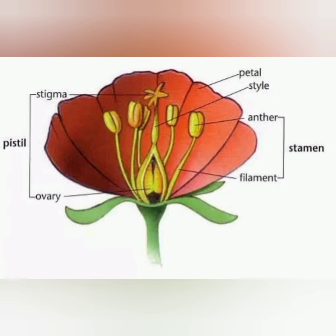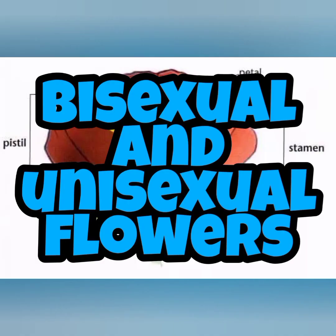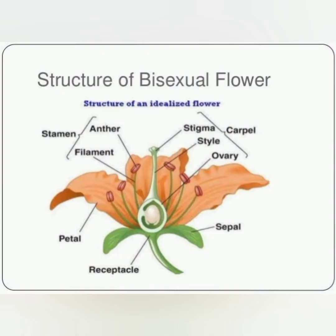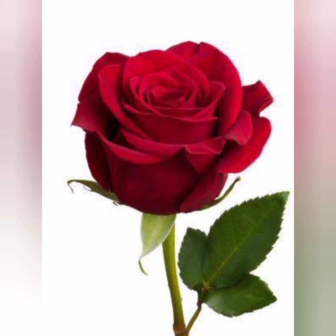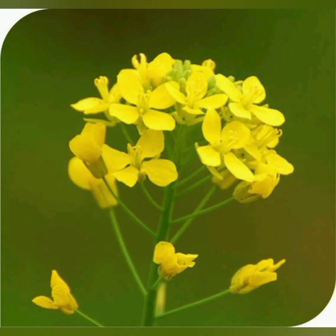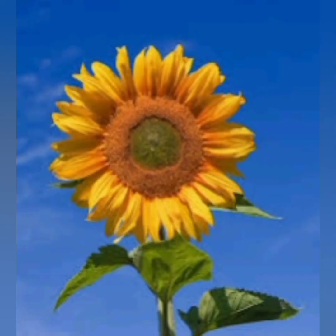Stamens and carpels are essential for plants to help them reproduce. Next: bisexual and unisexual flowers. What are bisexual flowers? Some flowers contain both male and female reproductive organs — that means the male reproductive organ stamen and the female reproductive organ carpel are both present in one flower. That type of flower is called a bisexual flower. Examples: rose, hibiscus, mustard, sunflower, etc.